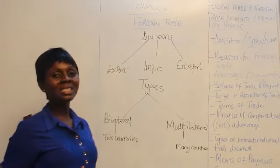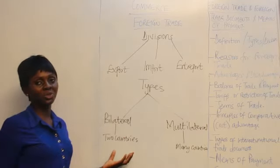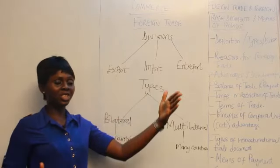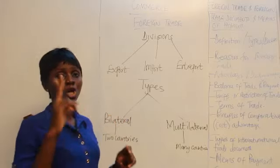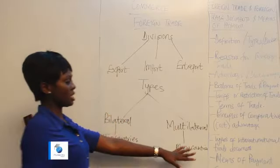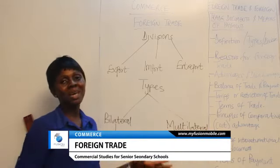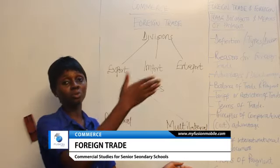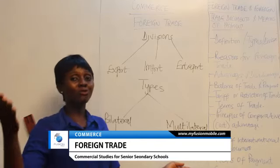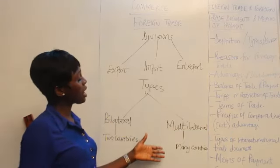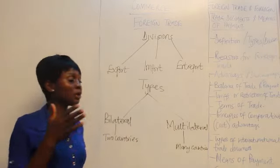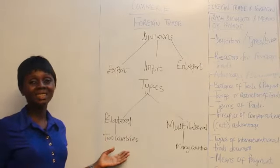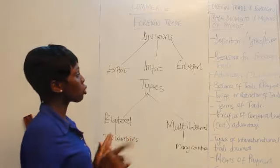Bilateral trade is the buying and selling of goods and services between just two countries — for example, between Nigeria and China. Multilateral trade involves buying and selling of goods and services between many countries. For instance, Nigeria can decide to buy goods from Dubai, from Ghana, from the US or UK at the same time.